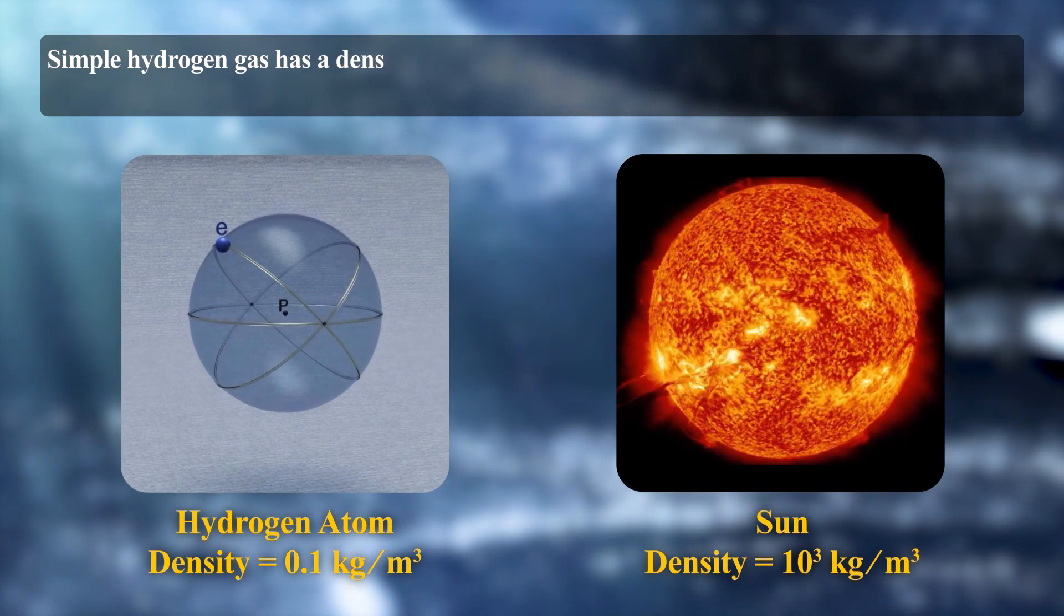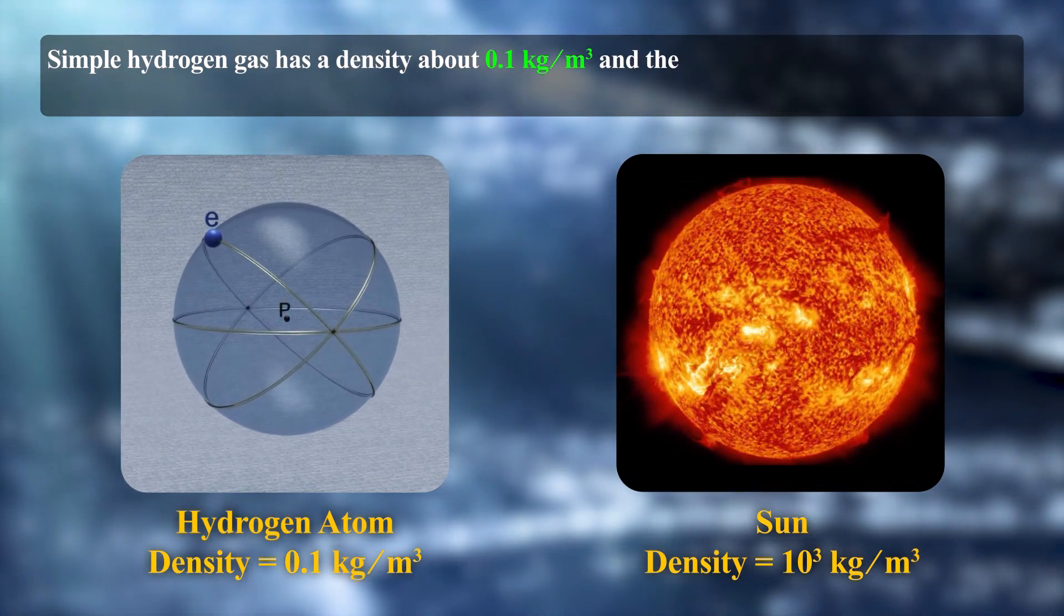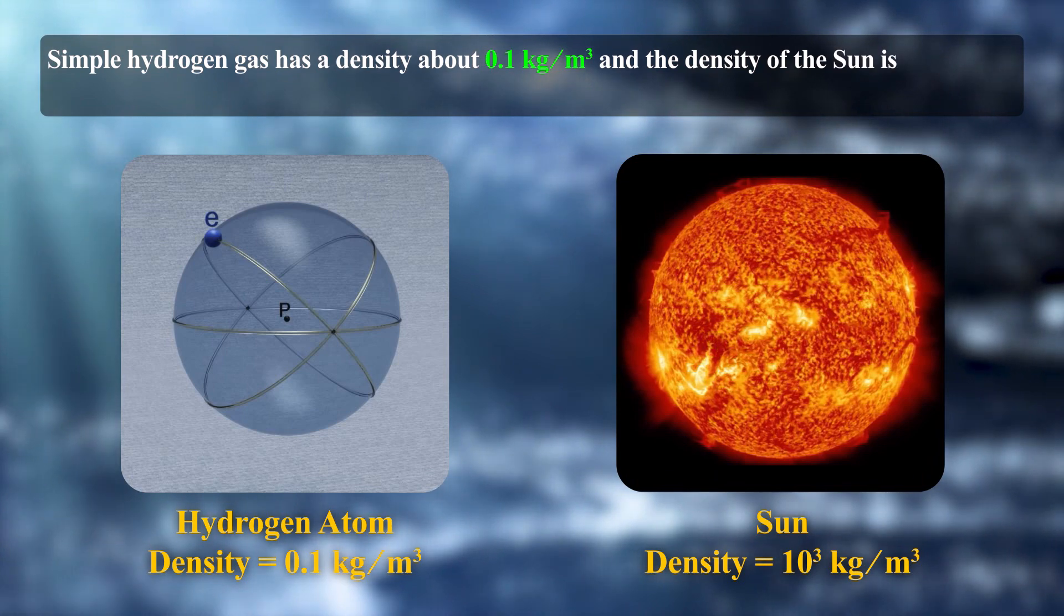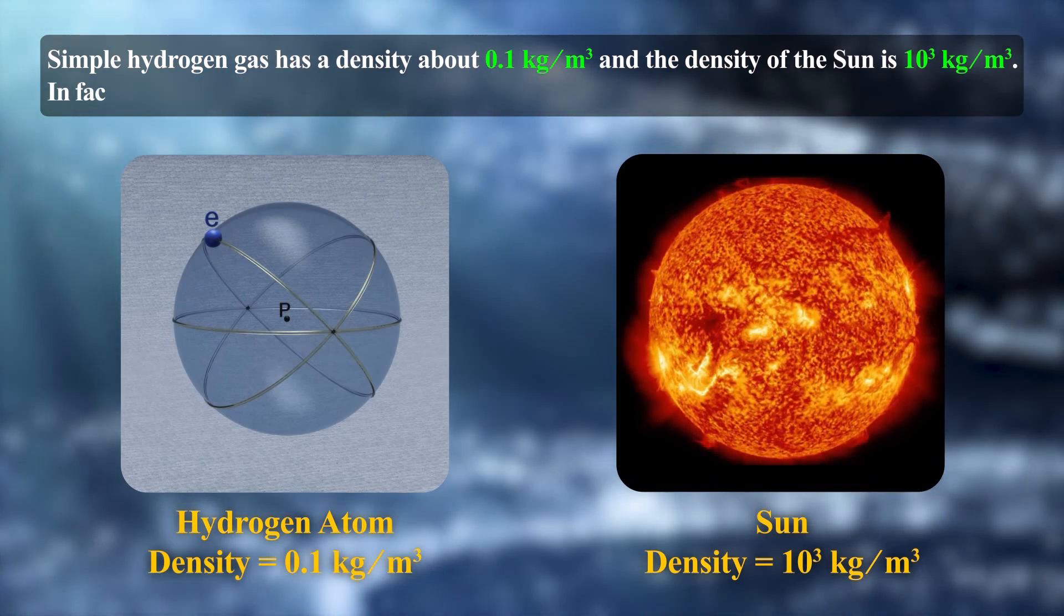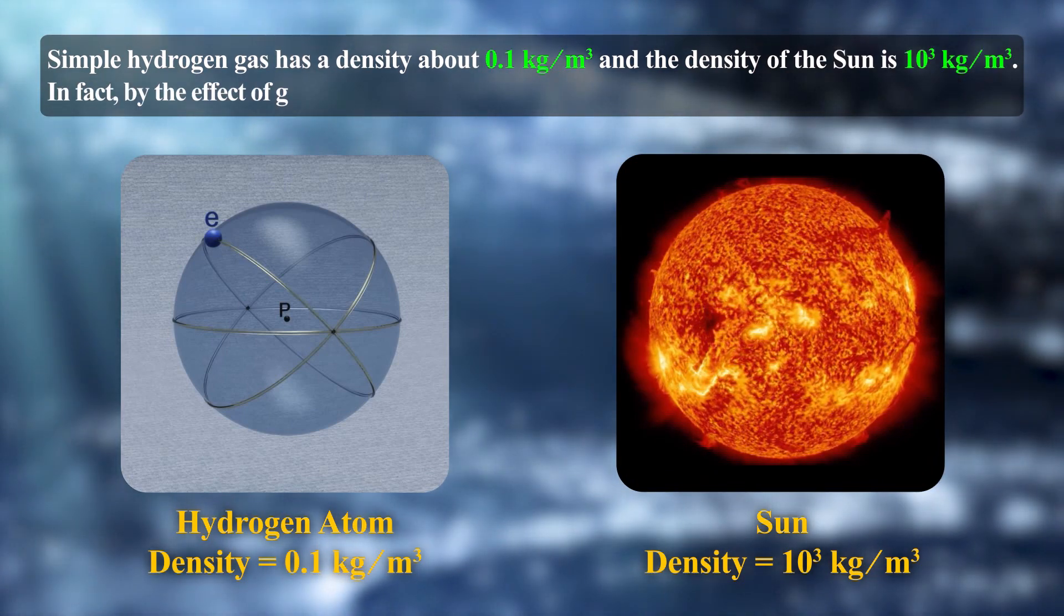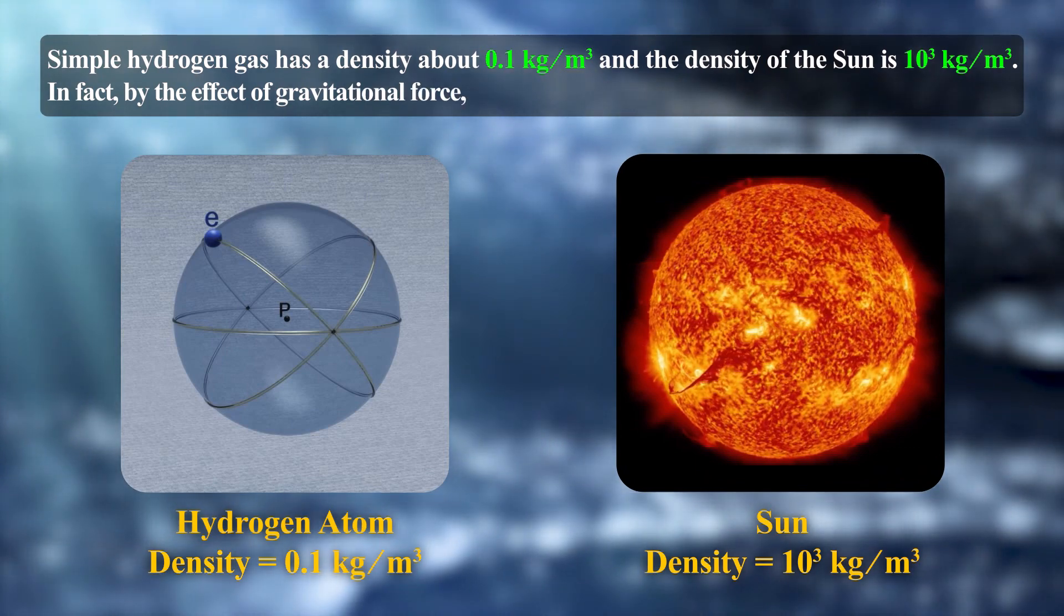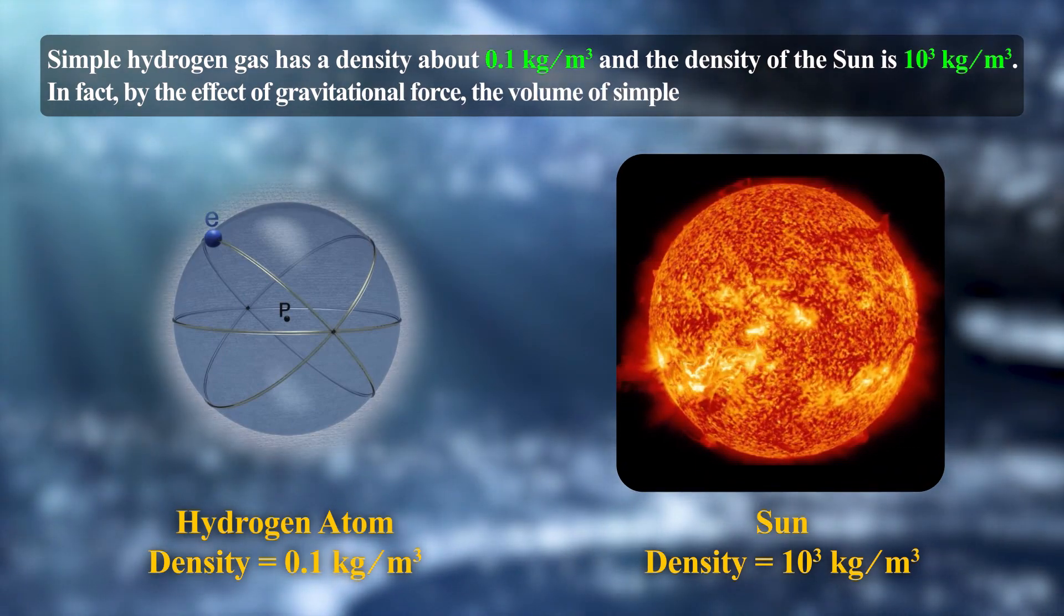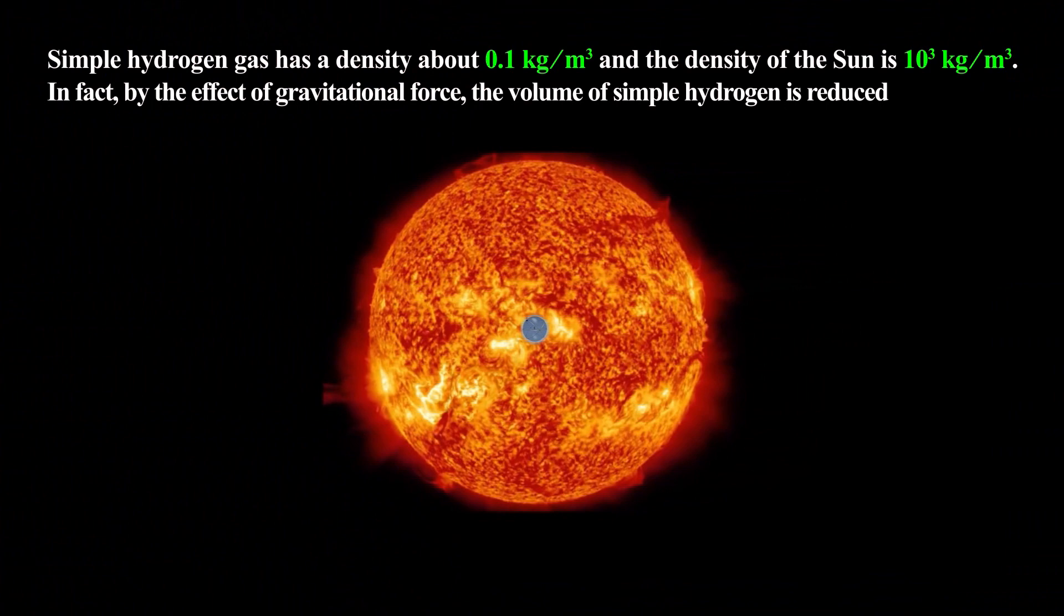Simple hydrogen gas has a density about 0.1 kilograms per cubic meter, and the density of the Sun is 10 to the power of 3 kilograms per cubic meter. By the effect of gravitational force, the volume of simple hydrogen is reduced to 10 to the power of minus 4 times.